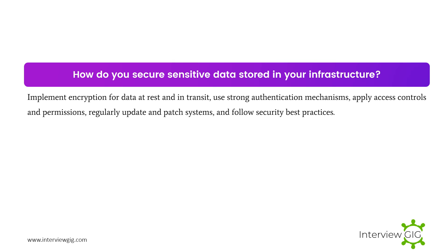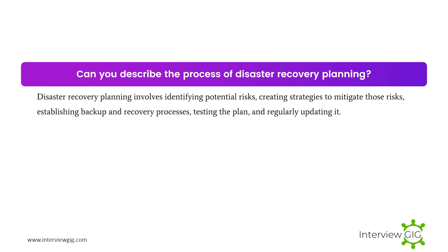How do you secure sensitive data stored in your infrastructure, and what is the disaster recovery planning process? Implement encryption for data at rest and in transit, use strong authentication mechanisms, apply access controls and permissions, regularly update and patch systems, and follow security best practices. Disaster recovery planning involves identifying potential risks, creating strategies to mitigate those risks, establishing backup and recovery processes, testing the plan, and regularly updating it.